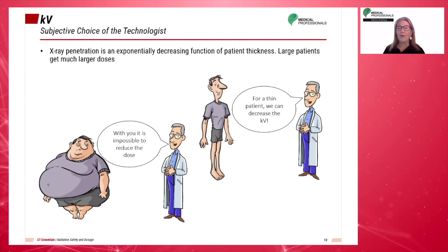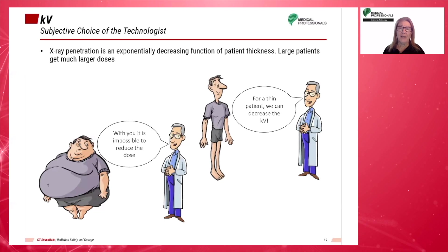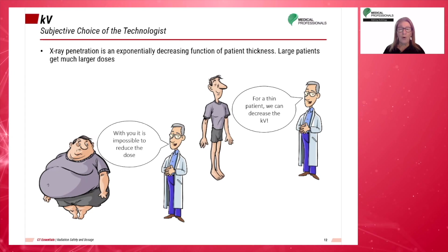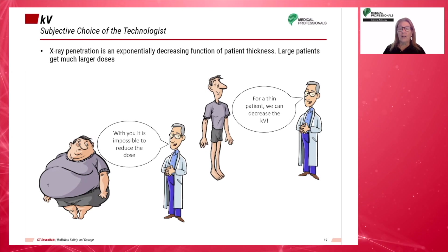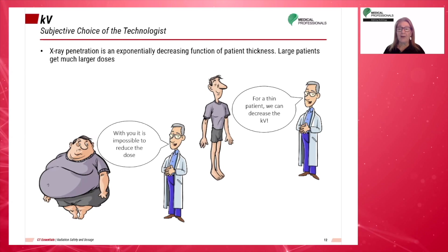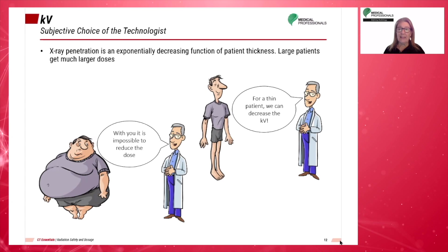It is important to know that x-ray penetration is an exponentially decreasing function of patient thickness. Thus, larger patients will need much larger doses. We use high KVP to penetrate large patients, large bony patients, and bone. As we increase KVP, more of the beam penetrates the tissue with higher energy, so interactions occur more according to the Compton effect. This produces more scatter radiation, which increases image noise, reduces contrast, and increases dose.